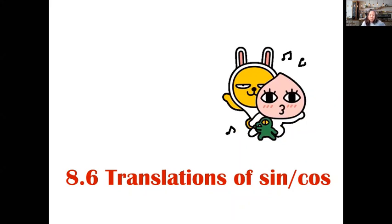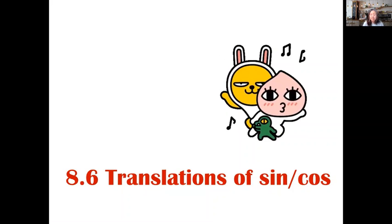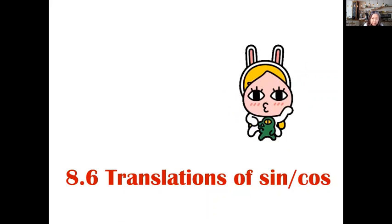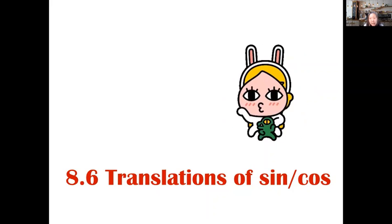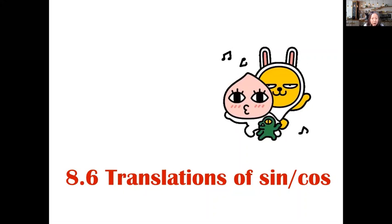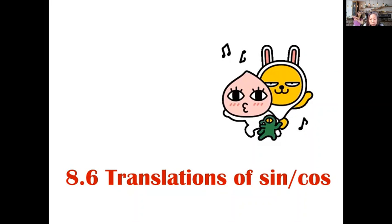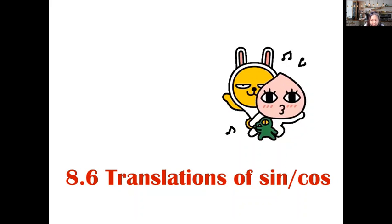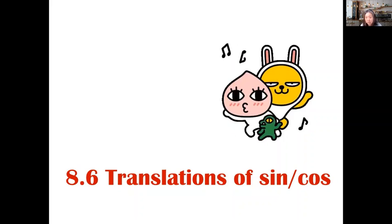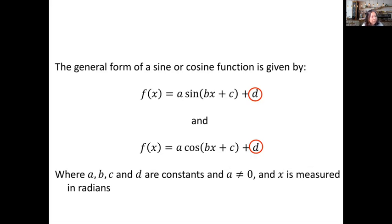Today in Algebra 2 Honors we will cover section 8.6 about translations of sine and cosine. We will look at the structure of equations of sine and cosine, and continue from the a value and b value that affect amplitude and period, to focus on the c value and d values from the structure of the equations.